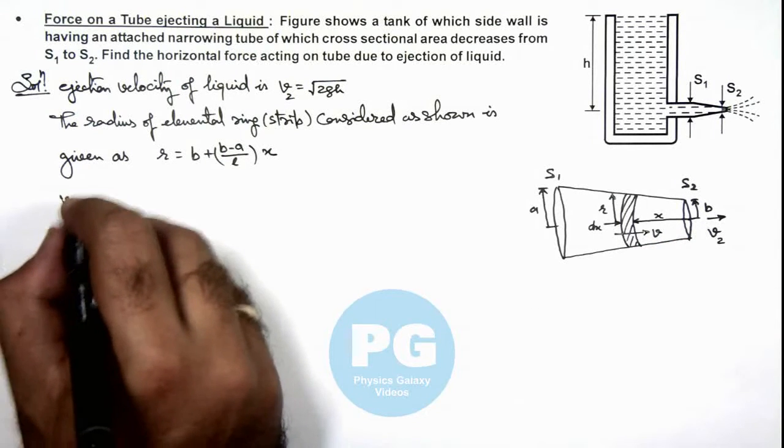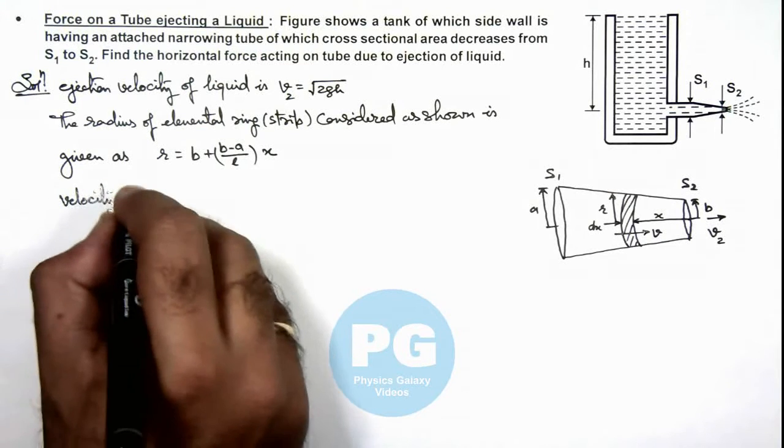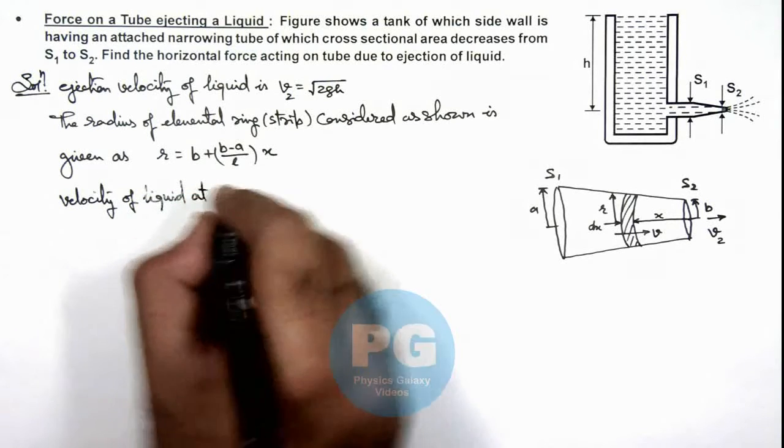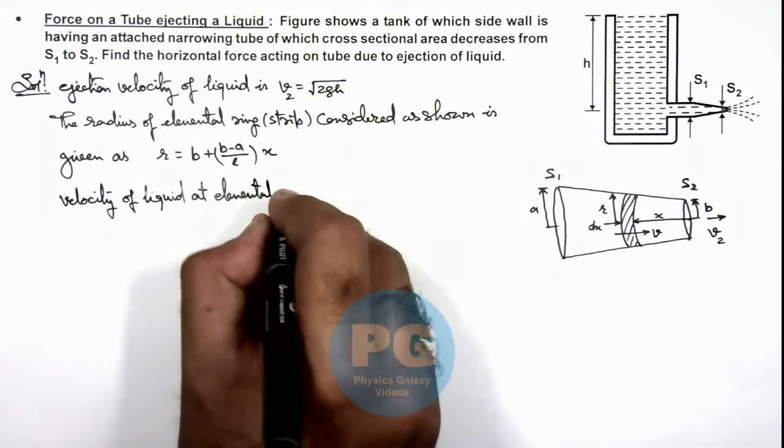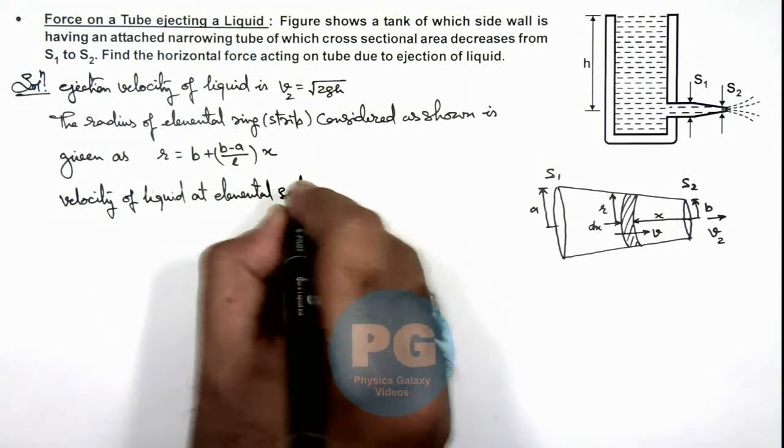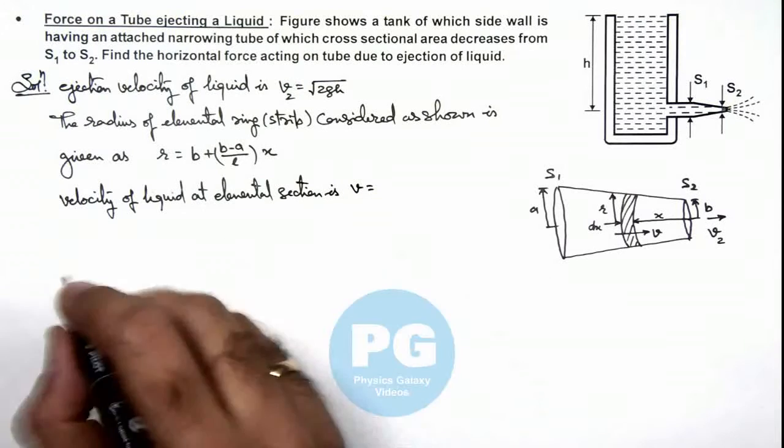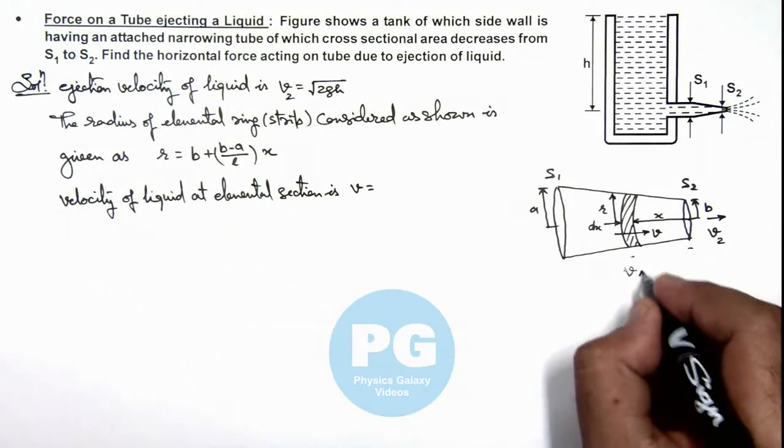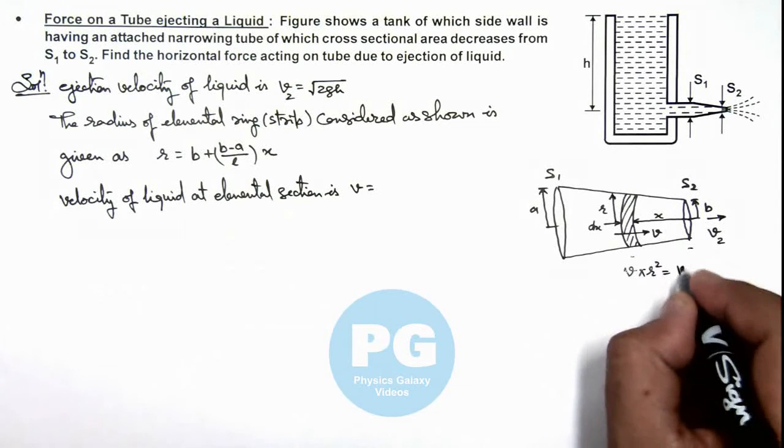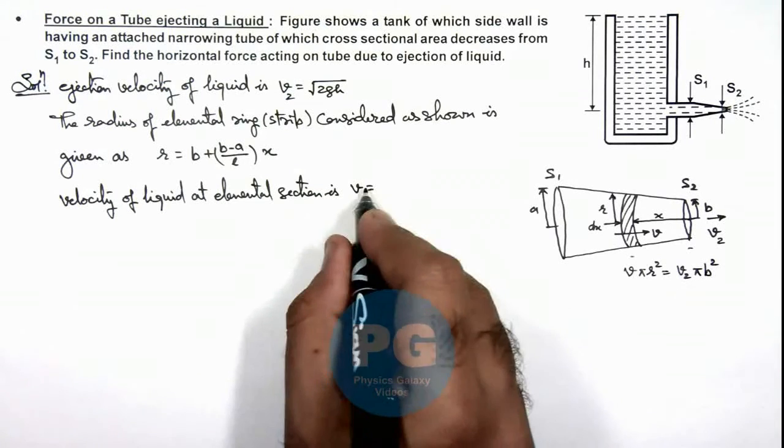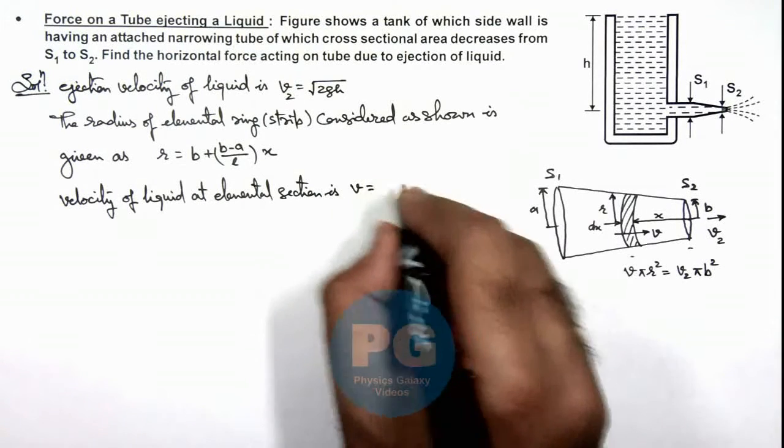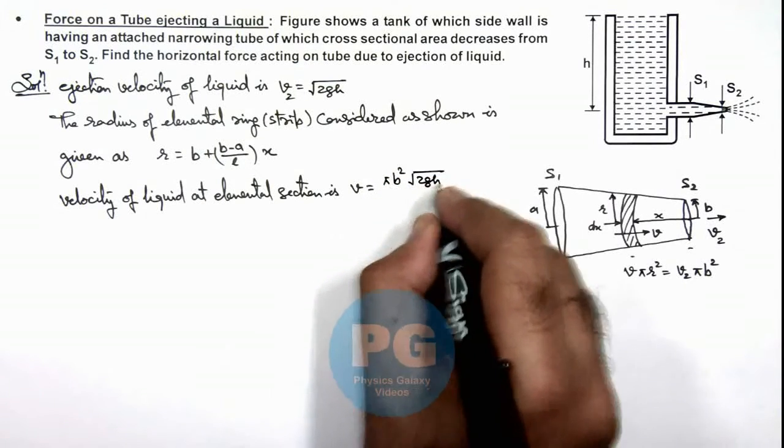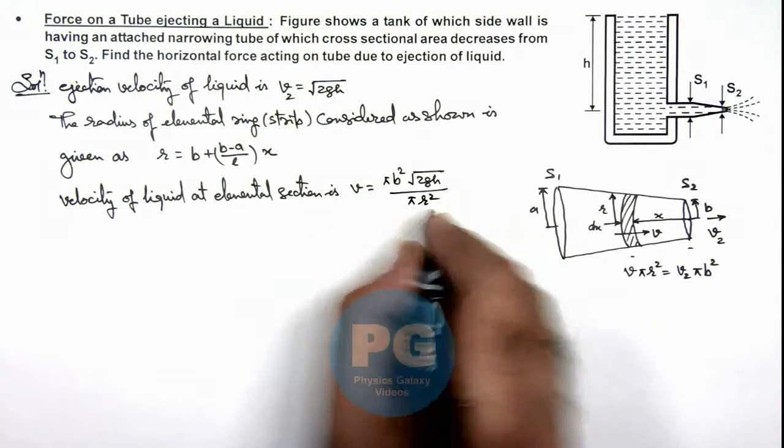So we can write velocity of liquid at elemental section. This we can calculate by continuity equation applied between this point and this point. Here we can write v·π·r² should be equal to v₂·π·b². So this will give us the value of v as π·b²·√(2gh) divided by π·r², where r we already calculated.